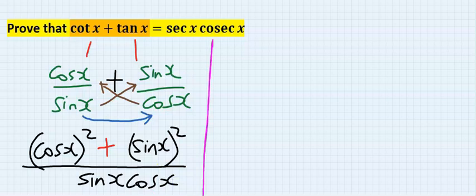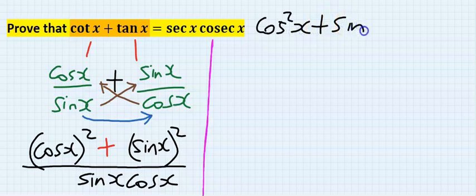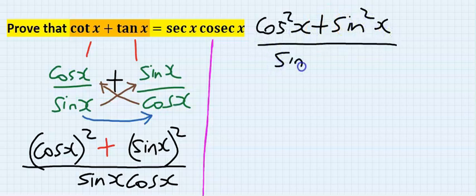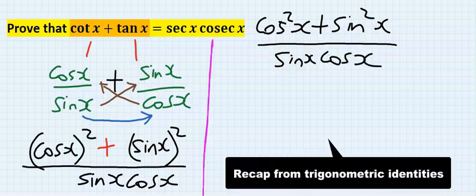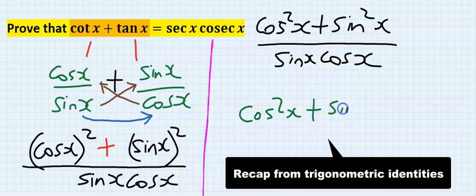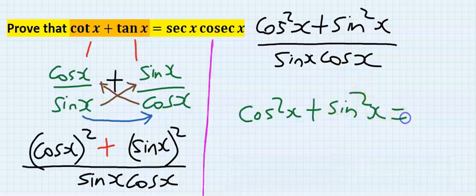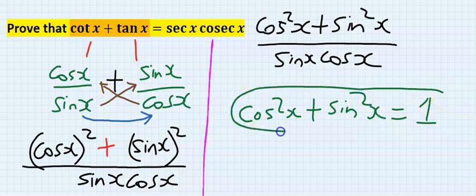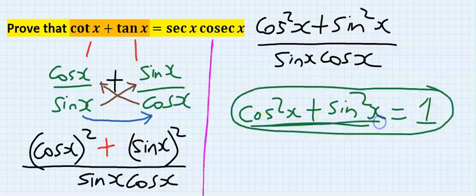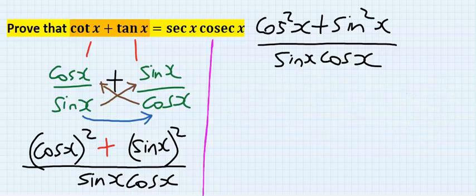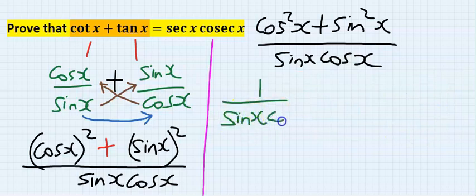This can be rewritten as cos squared x plus sin squared x over sin x cos x. From trigonometric identities, cos squared x plus sin squared x is equal to 1. So instead of this, I will be putting 1, giving us 1 over sin x cos x.